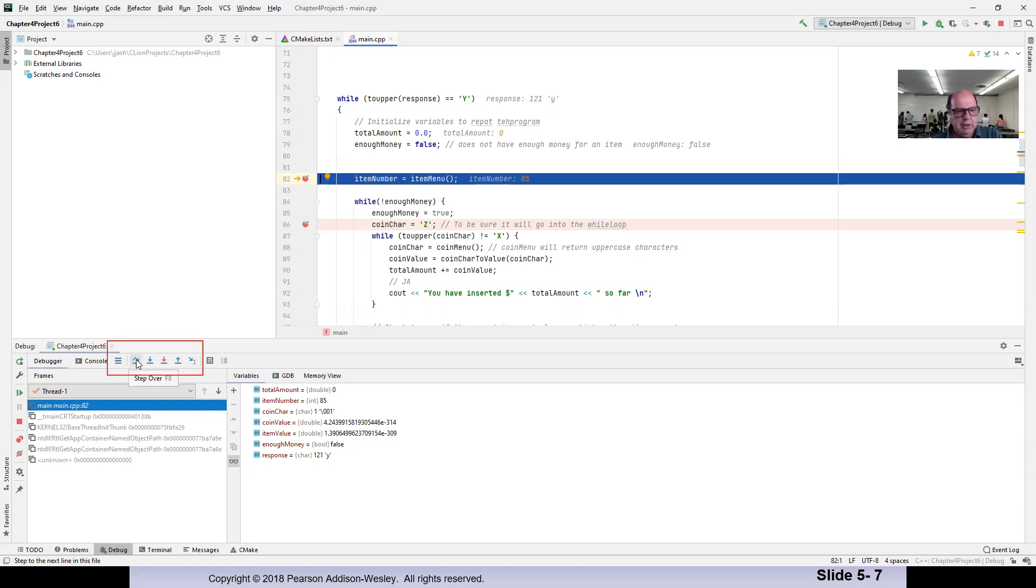This is saying step over, that's F8, I can use my keypad. So that means I am calling a function here, that's called item menu. So I can go inside of it, or I can go over it.